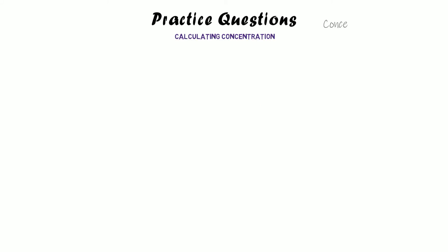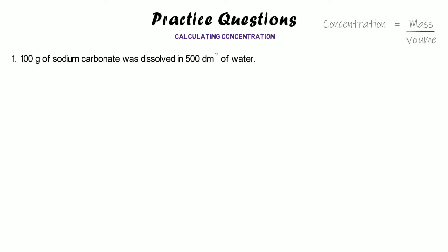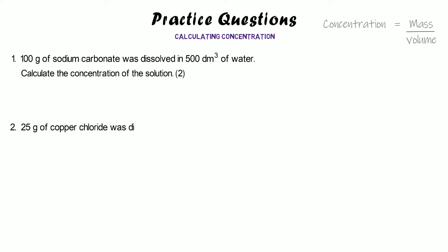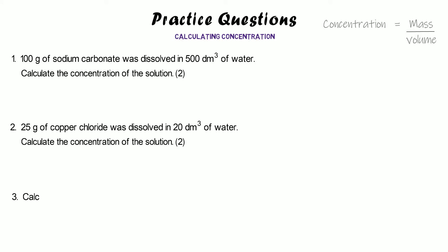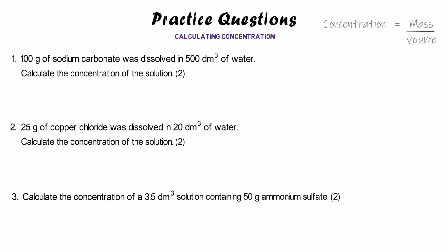Here are some practice questions for calculating concentration. Remember the equation: concentration equals mass divided by volume. First: 100 grams of sodium carbonate dissolving in 500 decimetres cubed of water — calculate the concentration. Second: 25 grams of copper chloride dissolved in 20 decimetres cubed — calculate the concentration. Third: calculate the concentration of a 3.5 decimetre cubed solution containing 50 grams of ammonium sulphate. Pause and have a go.